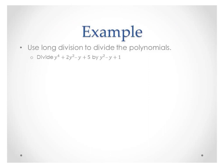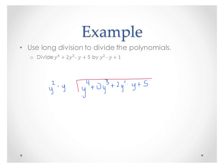We're going to start out by talking about long division with polynomials. We're going to divide y to the 4th plus 2y squared minus y plus 5 by y squared minus y plus 1. You start with your divisor bar. The first polynomial goes underneath. We have y to the 4th, and we need to remember to put in missing terms: plus 0y cubed, because there's no y cubed in that polynomial, plus 2y squared minus y plus 5. And we're dividing that by y squared minus y plus 1.